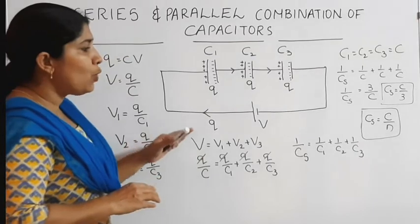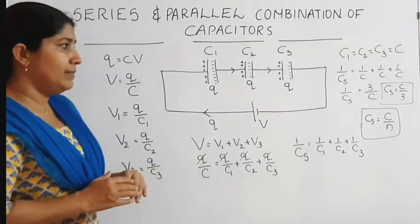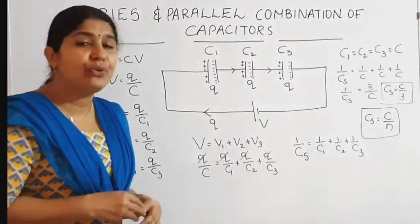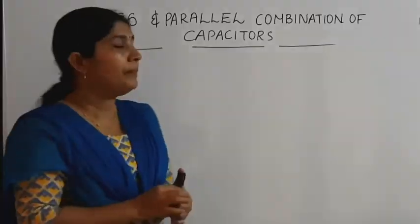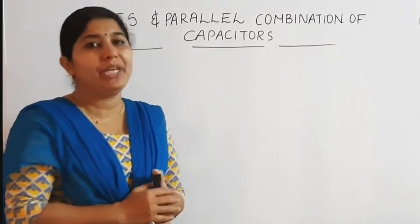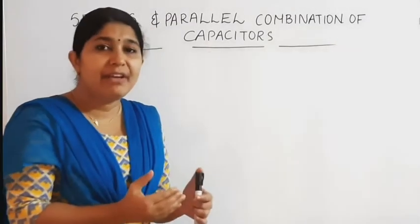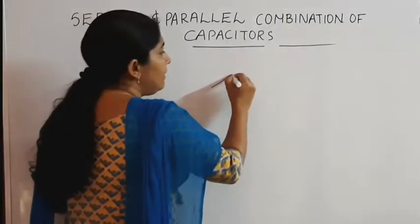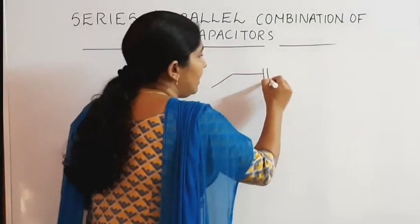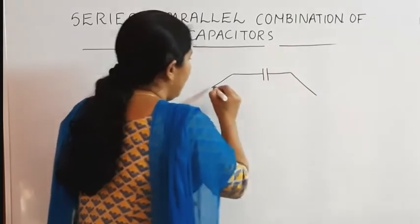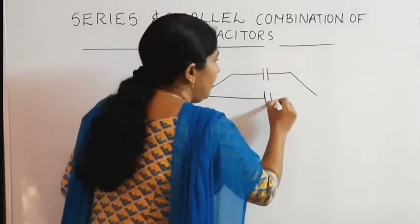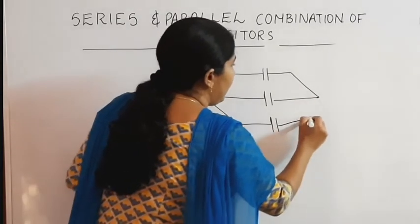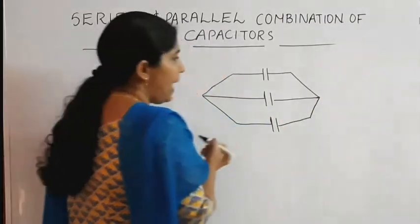That is all about the series combination of capacitors. Now we move on to parallel combination of capacitors. To explain parallel combination, again we take 3 capacitors C1, C2 and C3, and these capacitors are connected in parallel manner.